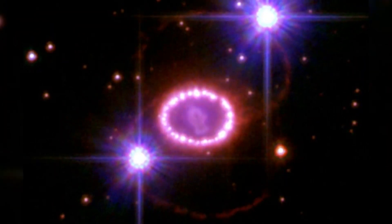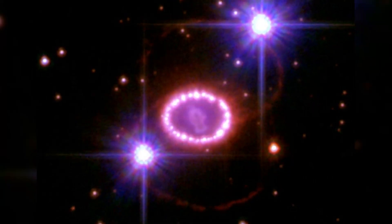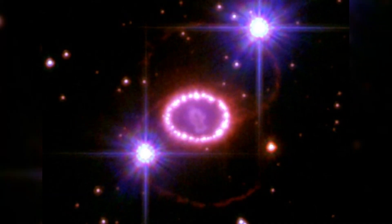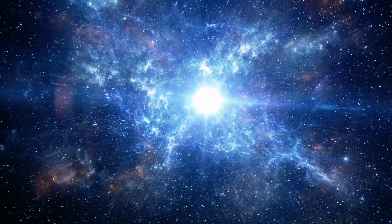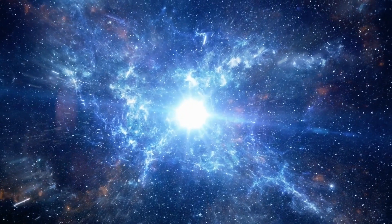A supernova may occur in one of two ways. In a type 1 supernova, a star accumulates matter from a nearby neighbor until a runaway nuclear reaction ignites. A type 2 supernova happens when a star runs out of nuclear fuel and collapses under its own gravity.